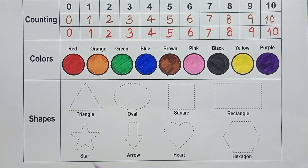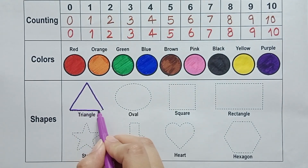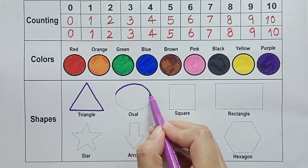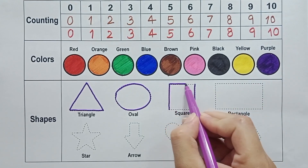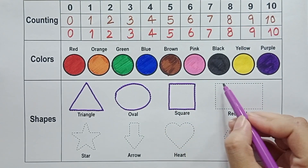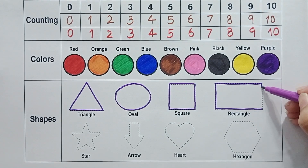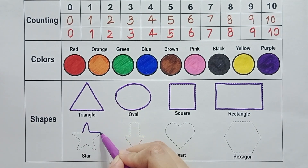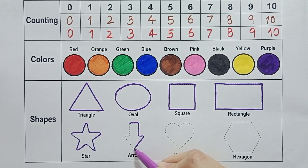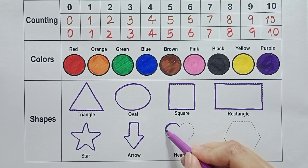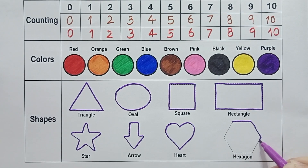Let's draw shapes. Triangle. Oval. Square. Rectangle. Star. Arrow. Heart. Hexagon.